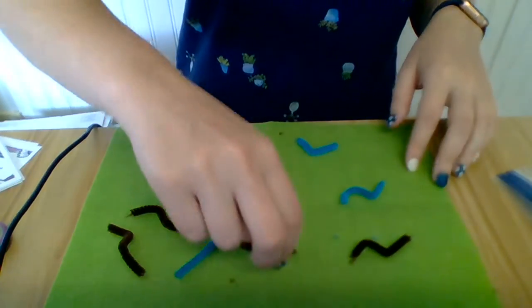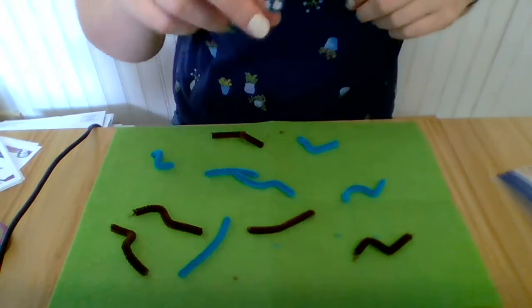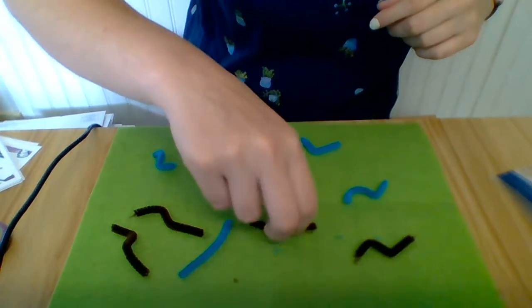Because remember, worms live under the ground. But the birds are really good with their beaks and they can go down and find the worms in the ground and pick them up.